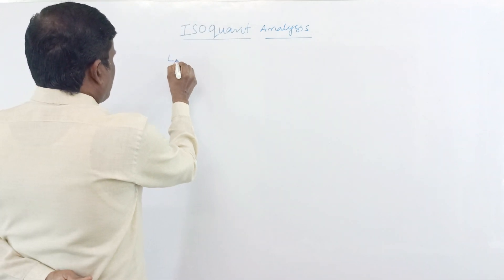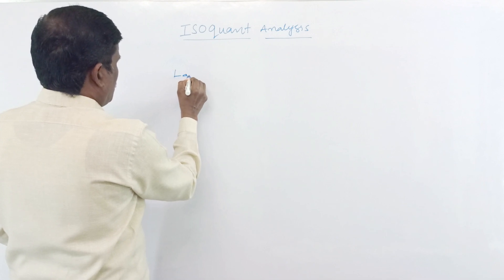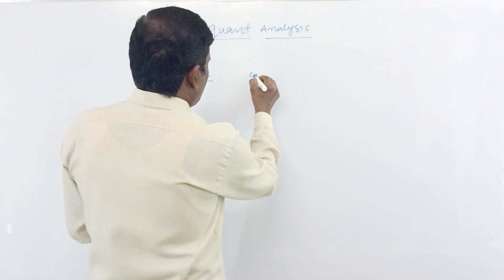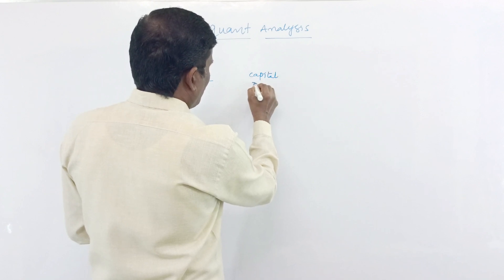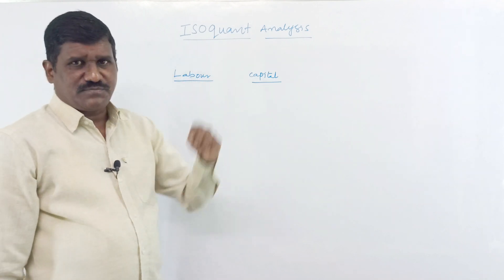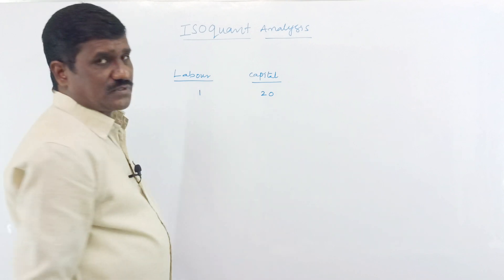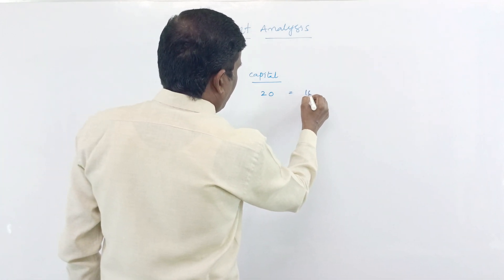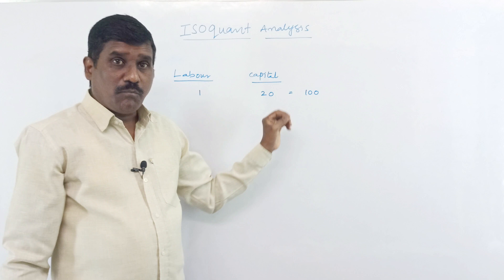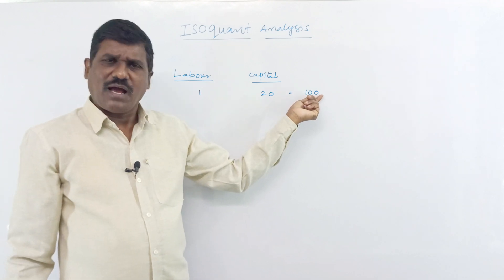For example, suppose labor and capital — the combination of labor and capital. Labor is one, and capital is 20. He wants to get 100 quantity, 100 production. By using the combination of labor and capital, he gets 100 quintals or 100 units of production.